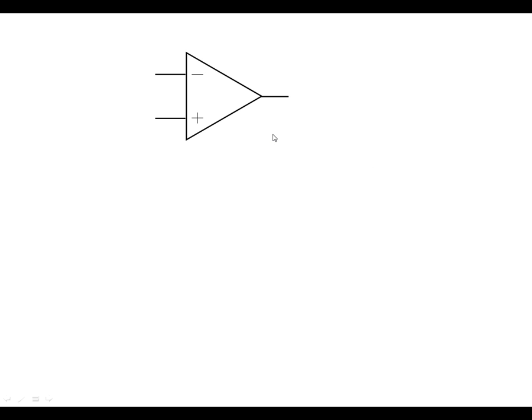as a comparator. Let's have a look at the circuit symbol. What we've got is two inputs: the inverting input given by the minus sign and the non-inverting input given by the plus sign, and then we've got the output here.